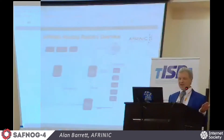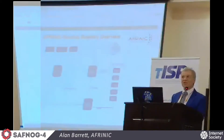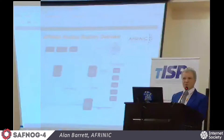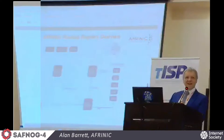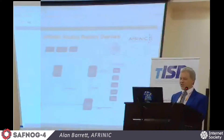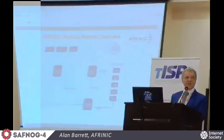So what is a routing registry? It's a database where network operators can register information about their routing policy. We say things like this route can be originated by this ASN, or this ASN peers with these other ASNs, or when we peer with this other ASN, here's our routing policy, the filters that we're going to impose. There are tools which can automatically create the filters to help you configure your routers based on what's in the routing registry.